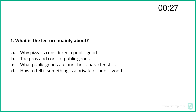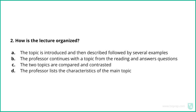The key insight in paying for public goods is to find a way of assuring that everyone will make a contribution. For example, if people come together through the political process and agree to pay taxes and make group decisions about the quantity of public goods, then they can all feel like they are being treated equally because everyone contributes. Now, answer the questions. Question 1: What is the lecture mainly about? Question 2: How is the lecture organized?